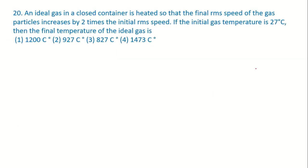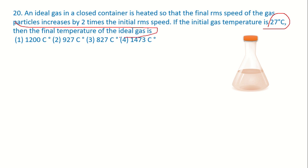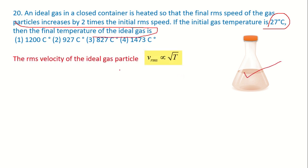The next question says that an ideal gas in a closed container is heated so that the final RMS speed of the gas particles becomes 2 times the initial RMS speed. If the initial temperature is 27 degrees Celsius, we have to find the final temperature. We know that RMS velocity is directly proportional to the square root of temperature.